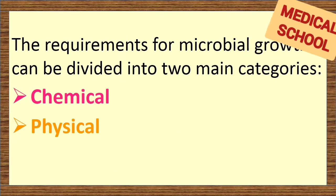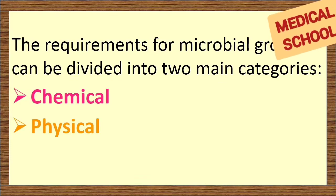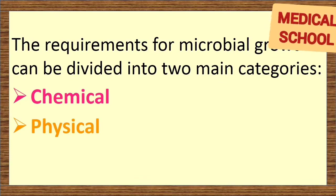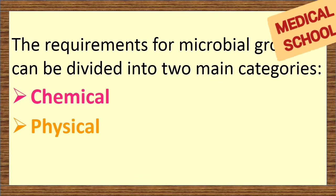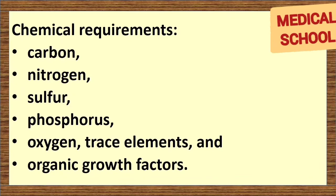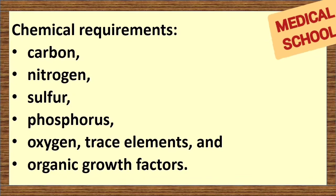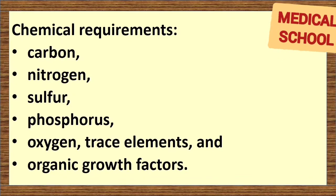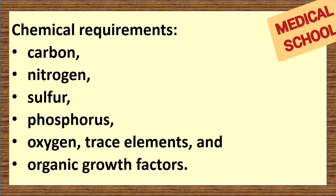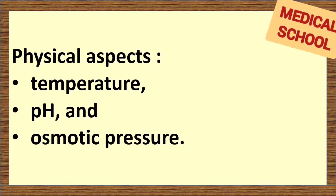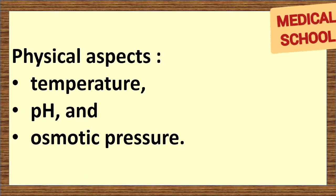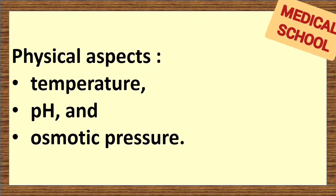The requirements for microbial growth can be divided into two main categories: chemical and physical. Chemical requirements include sources of carbon, nitrogen, sulfur, phosphorus, oxygen, and trace elements. Physical aspects include temperature, pH, and osmotic pressure.